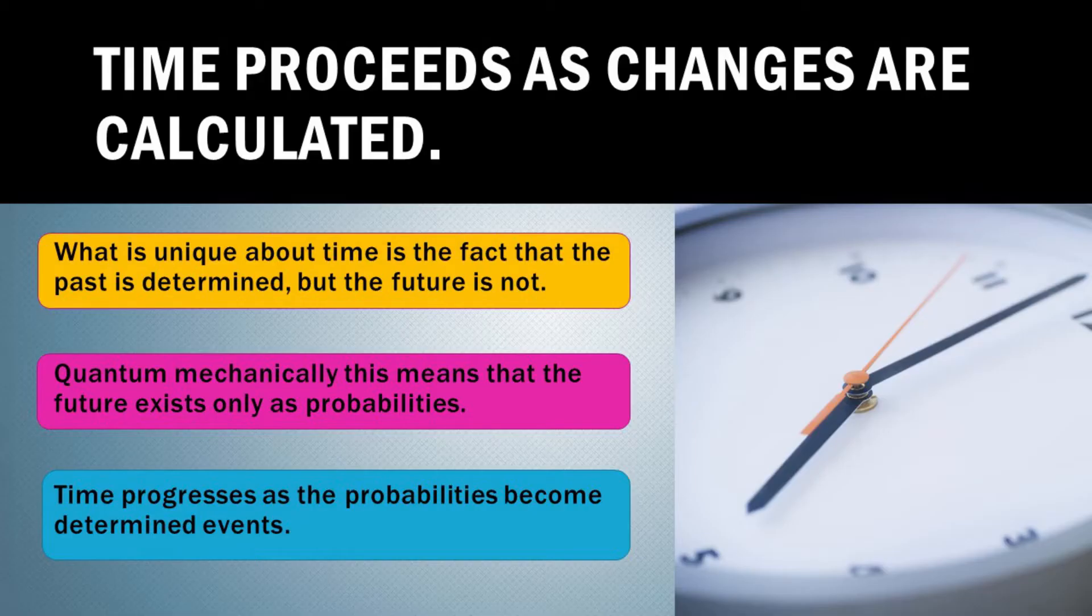What is unique about time is the fact that the past is determined but the future is not. Quantum mechanically this means that the future exists only as probabilities. Time progresses as the probabilities become determined events.